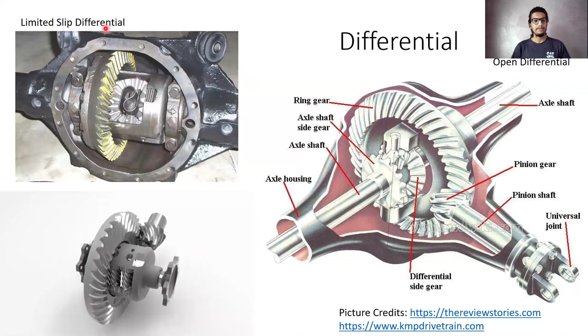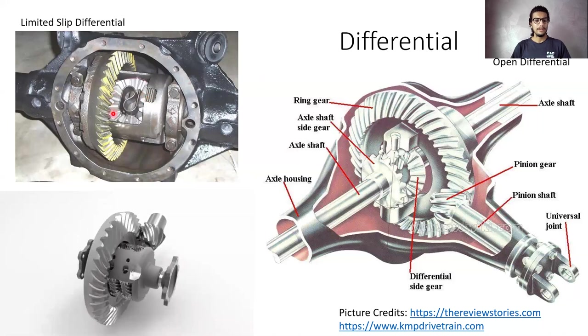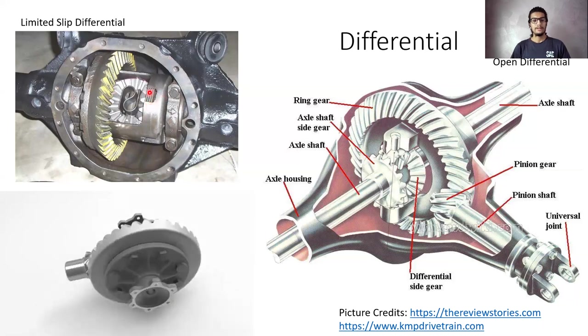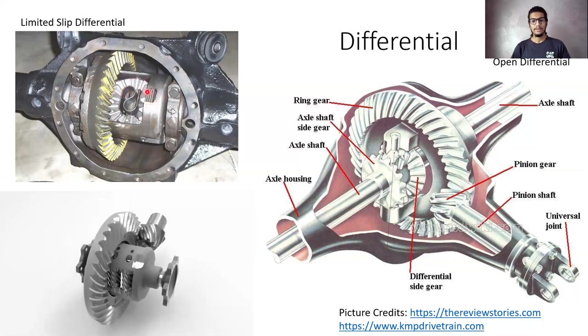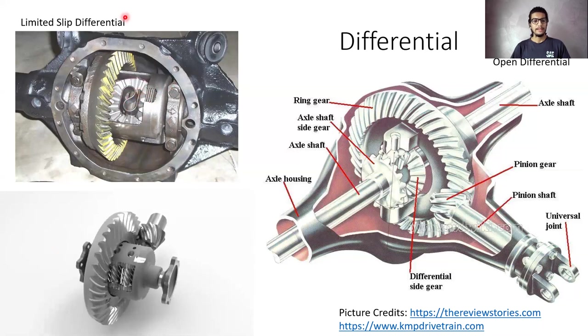Now, there is one more type of differential, the limited slip differential as compared to the open differential. Here, you have a shift spring in between to maintain the disks, that is the clutch disks over here, compressed. This is an advanced type of differential where it covers more cases than the normal one. This is the type of differential which you can see in our day-to-day life, in our cars.